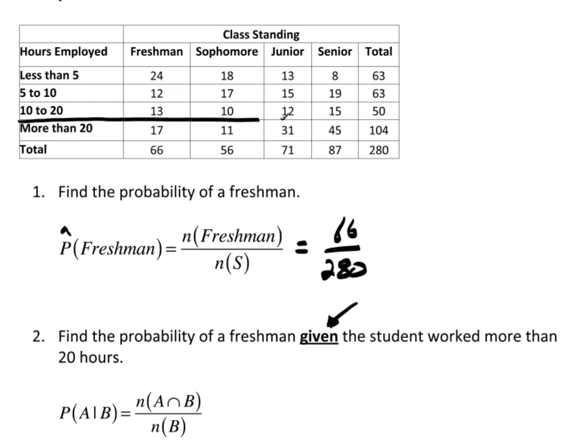So I'm telling you that we worked more than 20 hours. My universe has just been reduced to this right here. This is it, given more than 20 hours. So that means my universe consists of these people only. So what's the probability of a freshman? Well, here's a freshman. There was 17. 17 out of the 104.